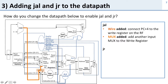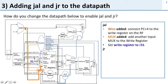We need a mux so we can choose this input — previously we were taking the write-back input from the ALU result, but we may also need to write in from the next PC. We need some control logic to control that, and finally we need a way to tell it to write to the correct register — register 31 (RA). This allows us to take the result from the next PC and write it into the register file into register 31.